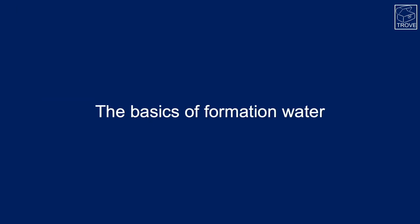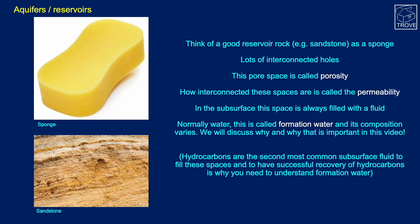The basics of formation water: deep down in the Earth's crust we have aquifers and also reservoirs. If you think of a good reservoir as something like a sponge, it's got lots of holes in it. Those holes are referred to as pore space or porosity, and how well interconnected they are is the permeability. In the subsurface, these pores are always filled with a fluid - the most abundant fluid in the Earth's crust is water. Formation water composition can vary, and we'll discuss that in more detail. The second most abundant fluid is hydrocarbon, and in the oil and gas business that's what we're after.